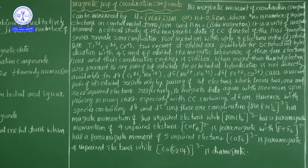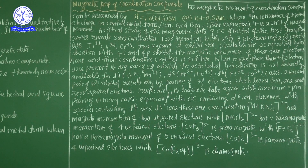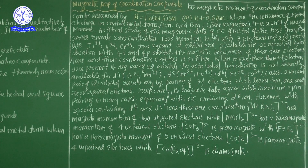For metal ions with up to 3 d-electrons — like Ti³⁺ (1 d-electron), V³⁺ (2 d-electrons), and Cr³⁺ (3 d-electrons) — two vacant d orbitals are available for octahedral hybridization with 4s and 4p orbitals. The magnetic behavior of these free ions and their coordination entities is similar.